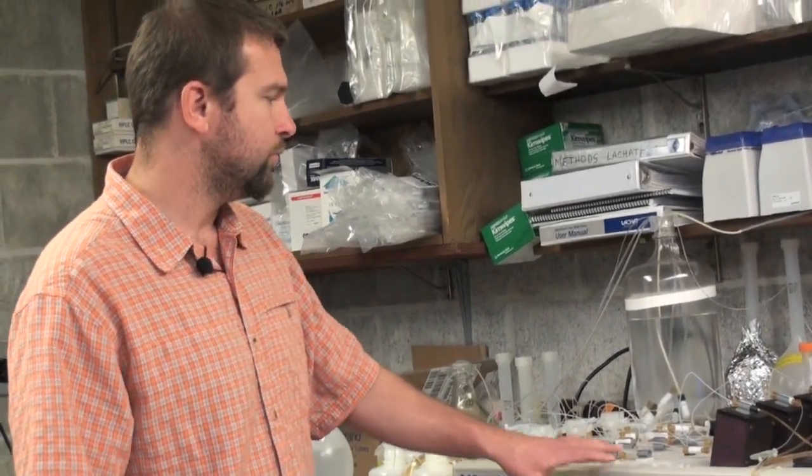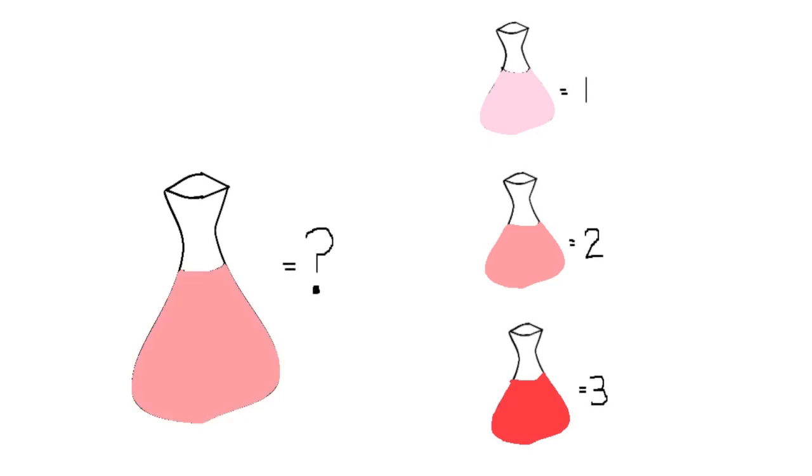What we are interested in doing is measuring the intensity of that color and relating it to a known concentration of the analyte that we are looking at. At this time we are analyzing nitrate, phosphate and silicate.